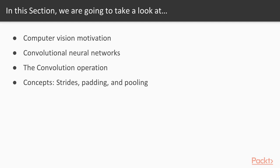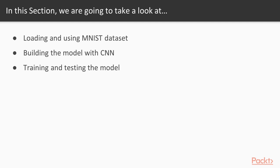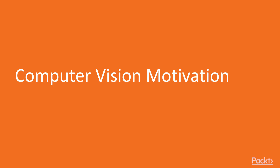Then we'll talk about a few more important concepts: strides, padding, and pooling. Then we'll see how we can load a specific dataset — MNIST in this case — which we will be using to demonstrate image classification. This will be followed by building the model with CNN in PyTorch, and finally we will train and test this model.